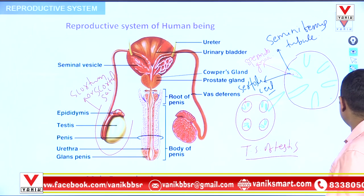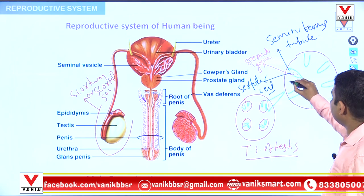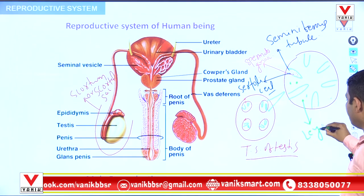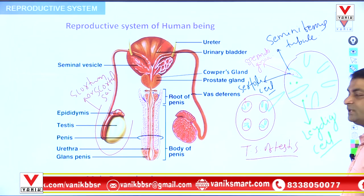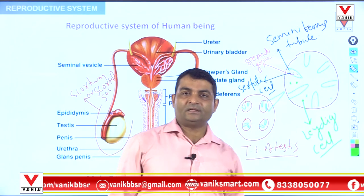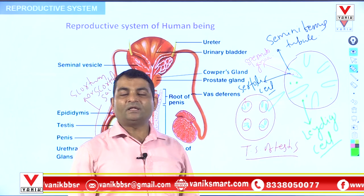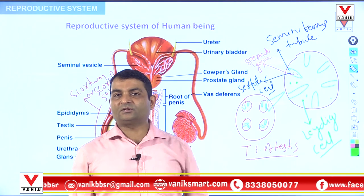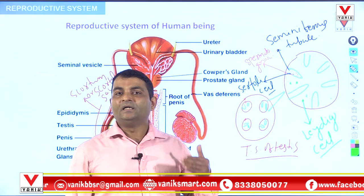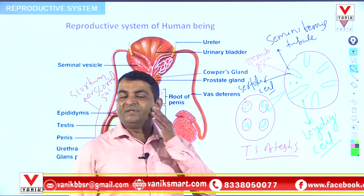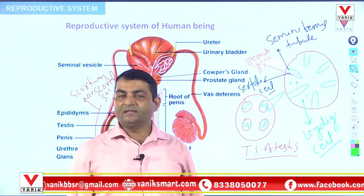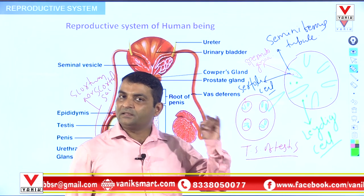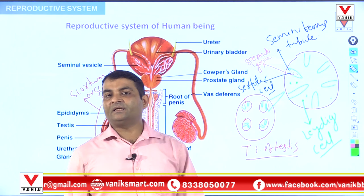In between the seminiferous tubes, another cell is present — that is called Leydig cell, also known as interstitial cell. What is the function of the Leydig cell or interstitial cell? It helps in the formation of a hormone called testosterone. The function of testosterone is to increase the secondary sexual characters of the male, like deep voice, beard, moustache, muscle, sexual urge, etc. When we discuss the female reproductive system, we will discuss another hormone called estrogen, which is responsible for female secondary sexual characters.